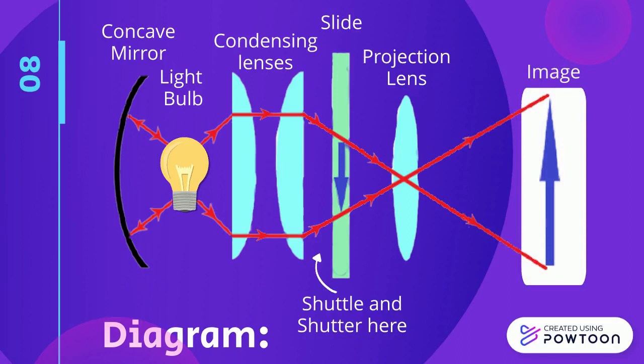Finally, light exits the movie projector, passes through the focus of the projection lens, and strikes on the projection screen so people can see the movie.